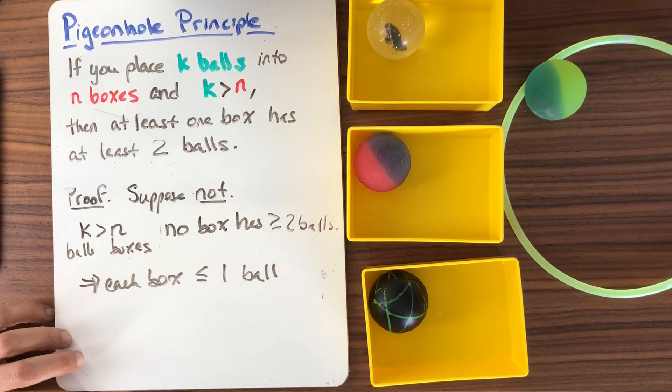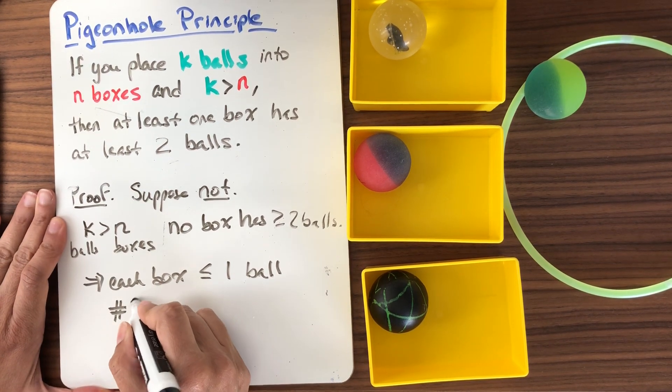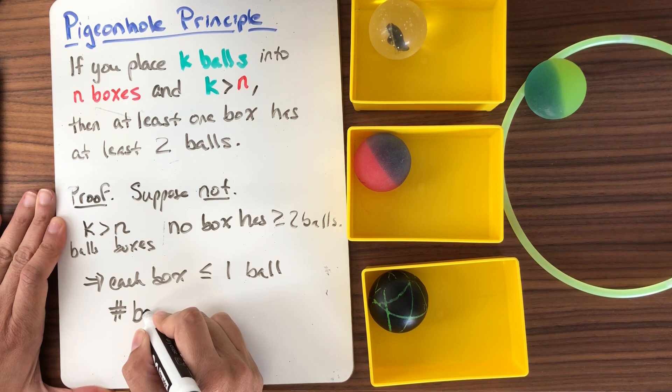So what does that mean? Well, let's just count. It's combinatorics. It also comes down to counting. So what does that mean? That means that the number of boxes that we have...